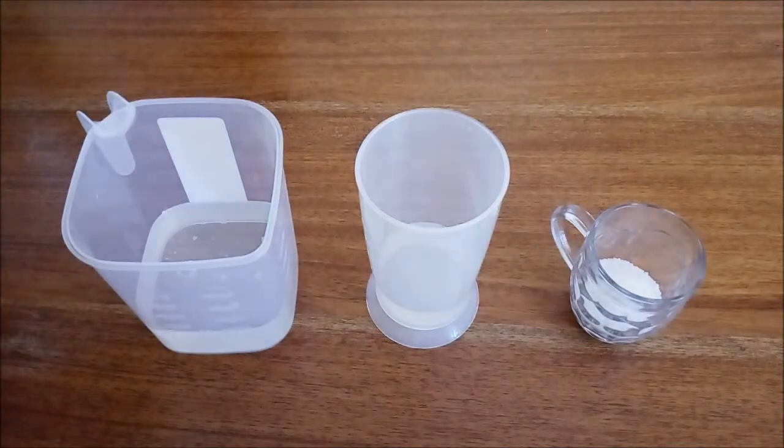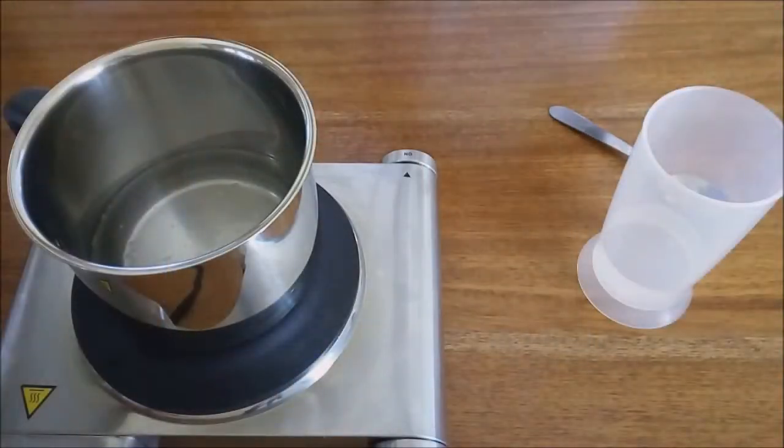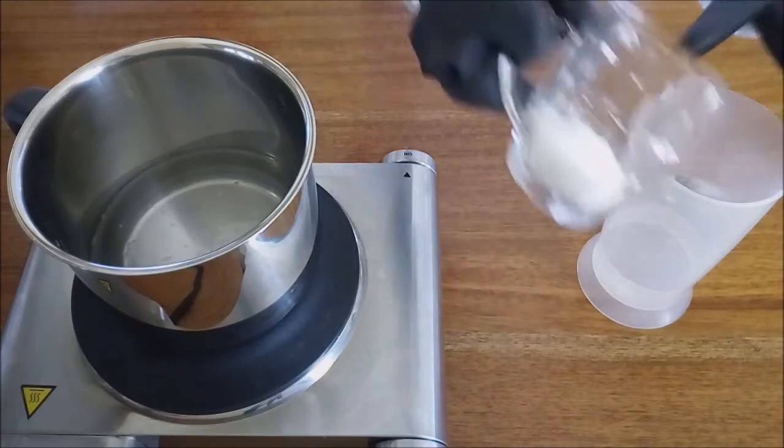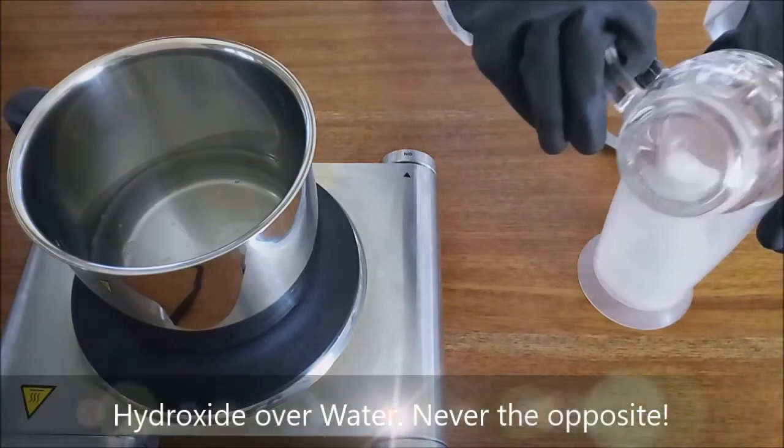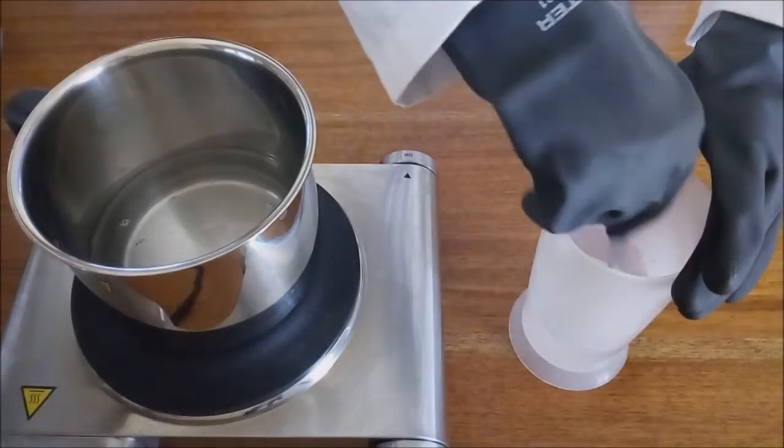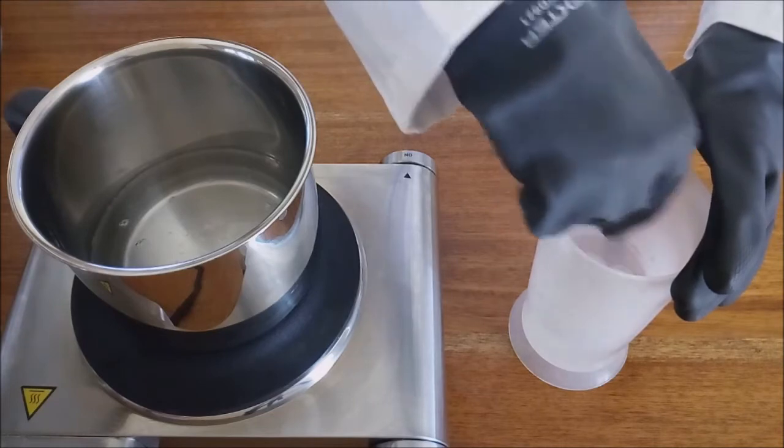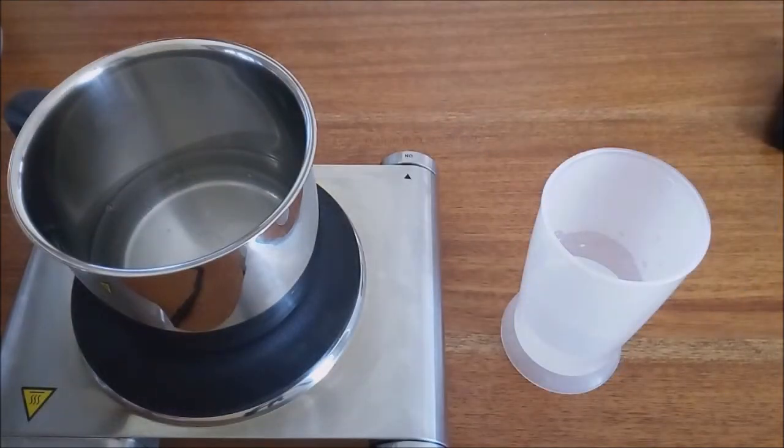With all the ingredients measured, put the oil on the heat. While the oil is on the stove, add the hydroxide carefully to the water, and never the other way around. Dissolve the hydroxide with a stainless steel spoon, never aluminum.